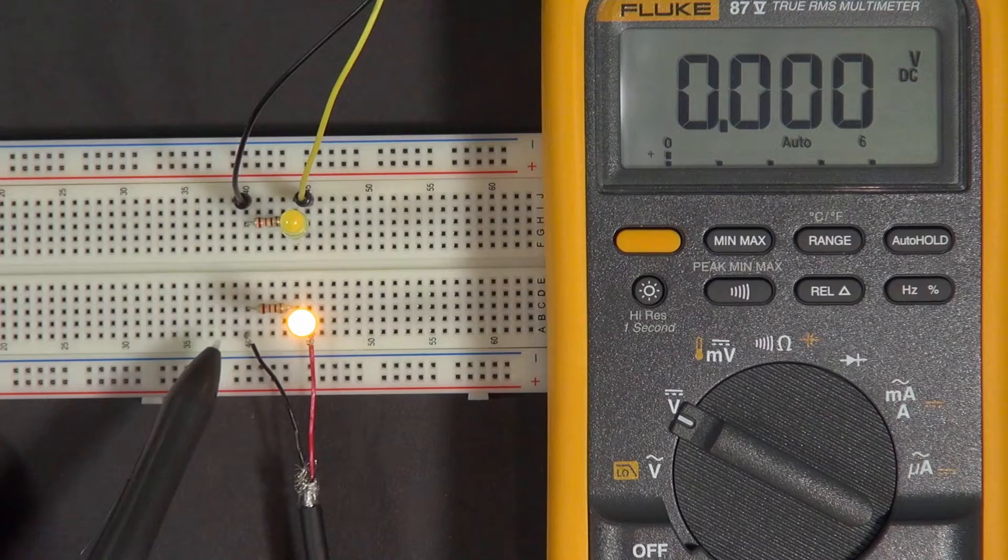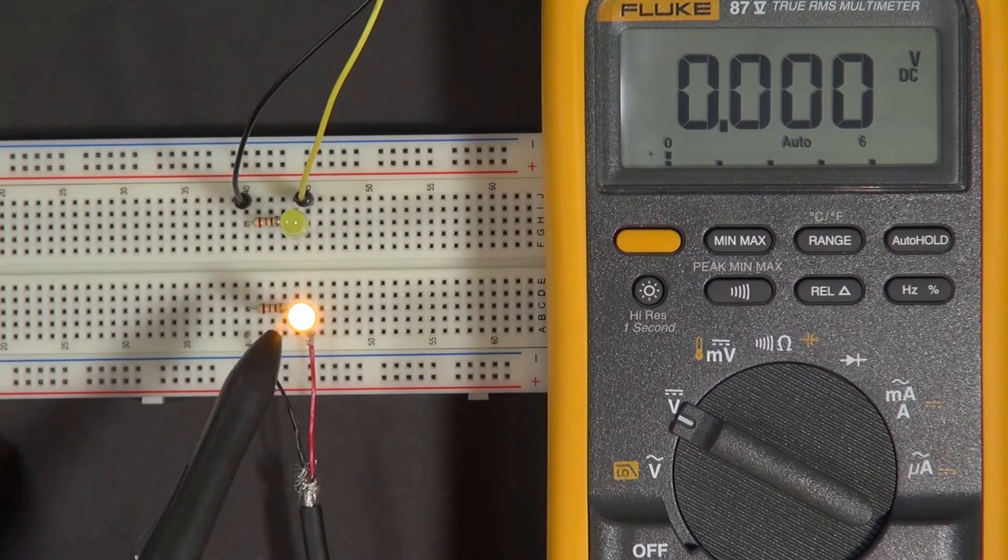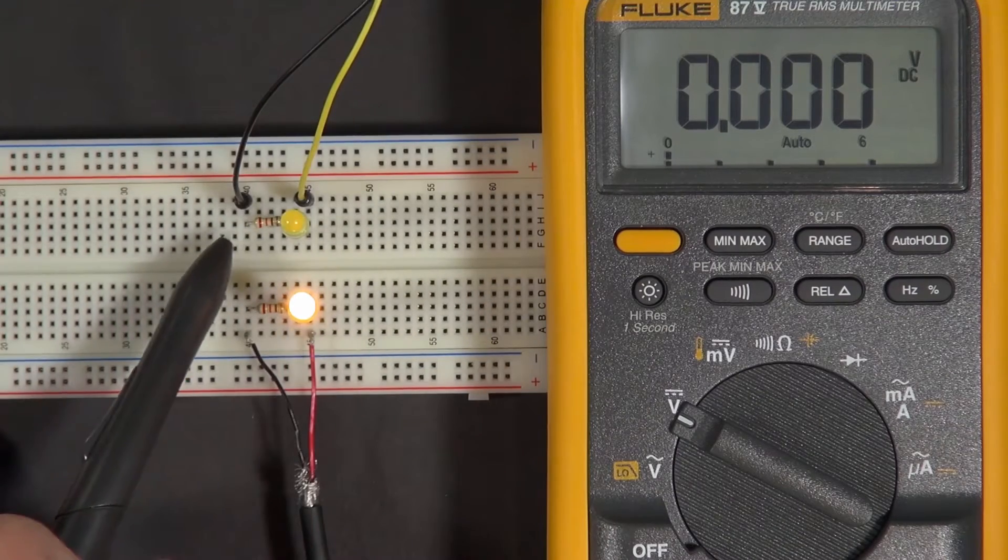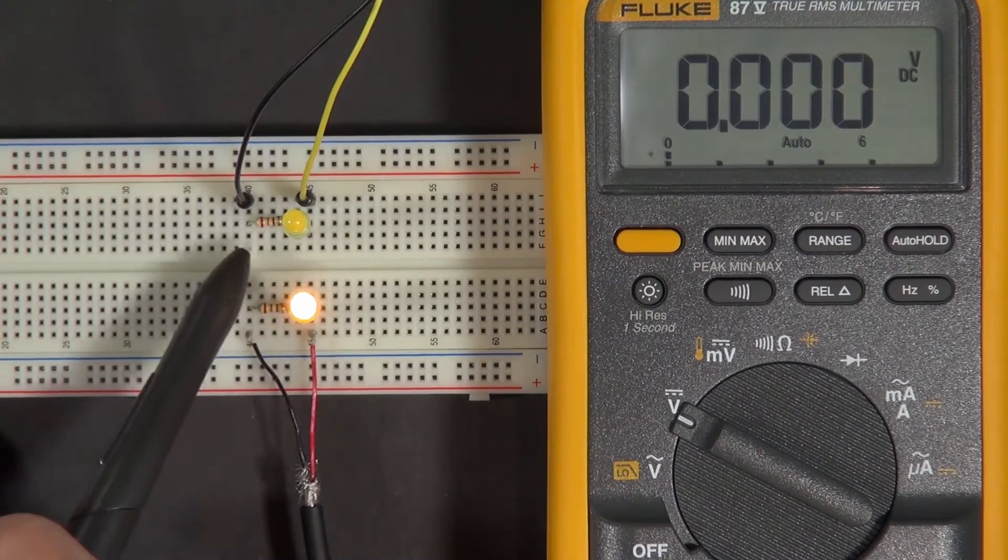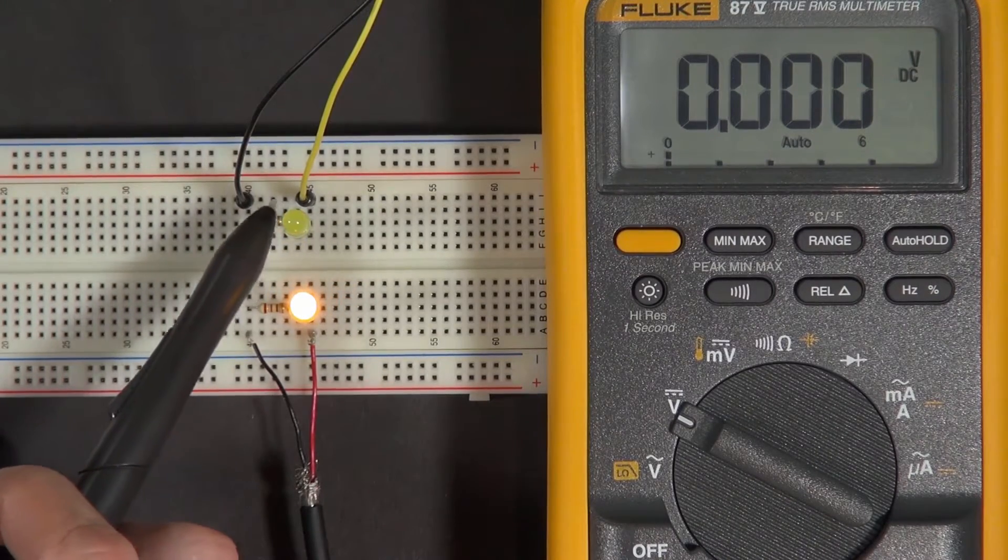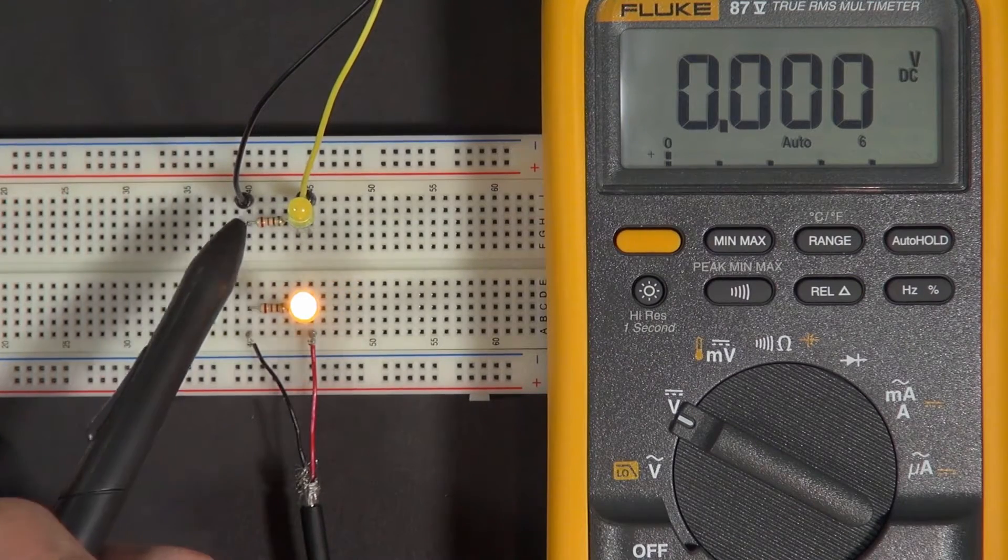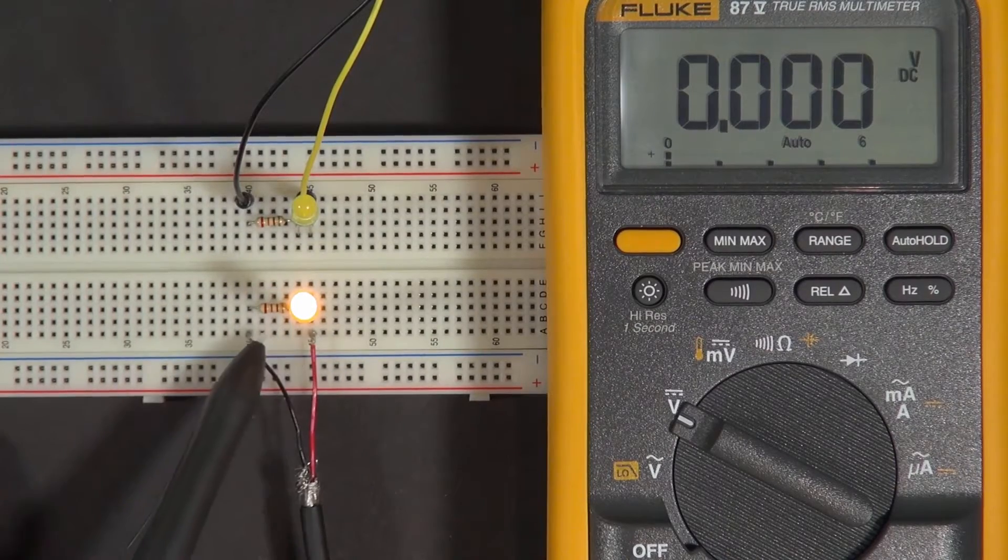For some reason, the 5 volts coming from this power supply is making this LED much brighter than the 5 volts coming from this signal. We were a little bit puzzled as to why that might be, because we measured both of these, and when we measured the voltage coming into this top circuit, we saw we had 5 volts when it was on. The bottom one we have 5 volts.